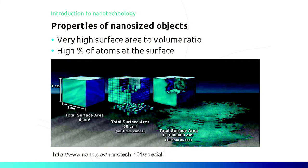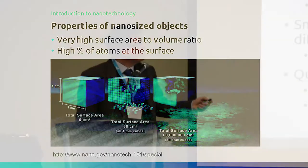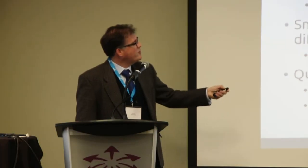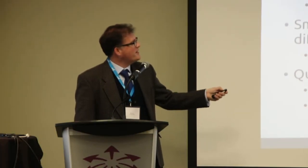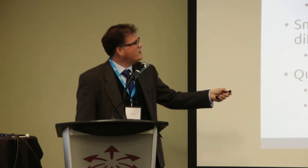The other issue around nanomaterials — which is really what kicks in when we're talking about safety — is very high surface area to volume ratio. Also, the percentage of atoms that actually appear at the surface of a molecule is very, very high. Chemistry occurs on the surface, so you get increased reactivity because of the increased surface area.